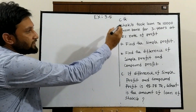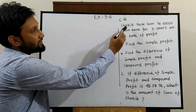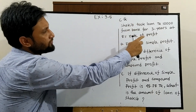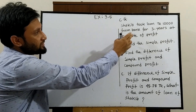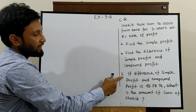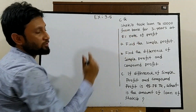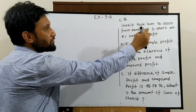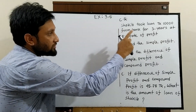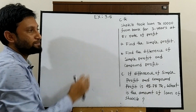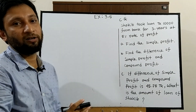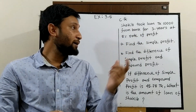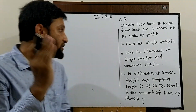Here, I have written a CQ where the question is: Shaqib took 10,000 Taka from a bank for 3 years at 5% rate of profit. By using this system, we have to solve A, B, and C. First one: find the simple profit. So here, the capital is 10,000 Taka, total time is 3 years, and profit rate is 5%. We know the simple profit formula is I = P × N × R.